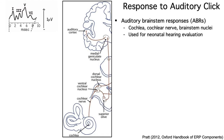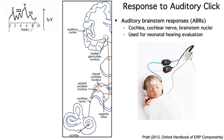The initial auditory ERPs come from the brainstem and are called the auditory brainstem responses, or ABRs. They are the one common exception to the rule that ERPs are ordinarily generated by cortical pyramidal cells. The ABRs are labeled with Roman numerals and are used to diagnose hearing impairments in clinical audiology. They are often measured in newborn infants to screen for hearing problems — both of my kids were screened in the hospital shortly after they were born.